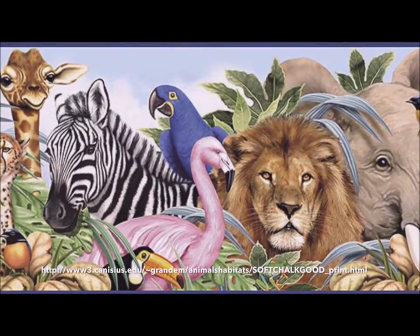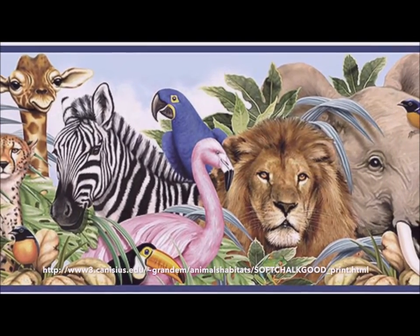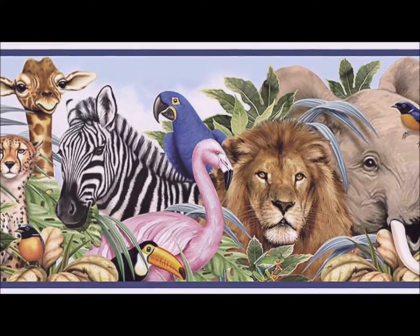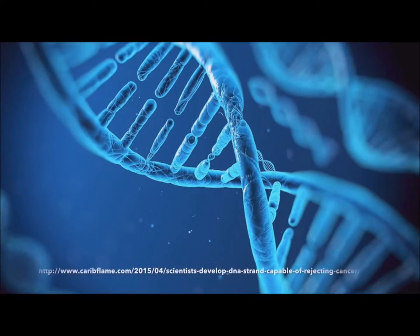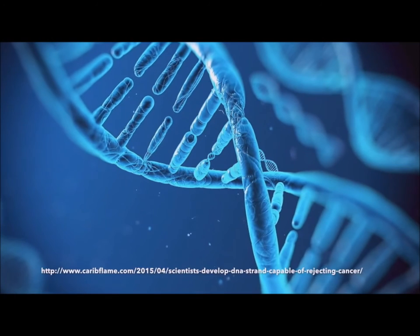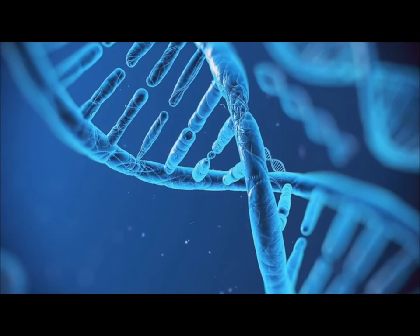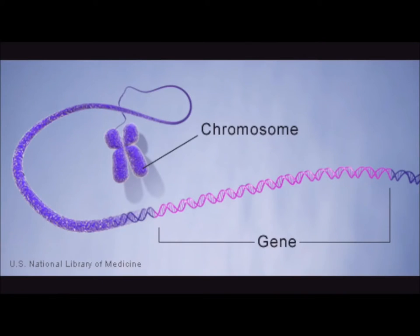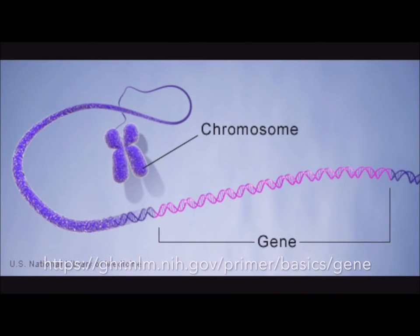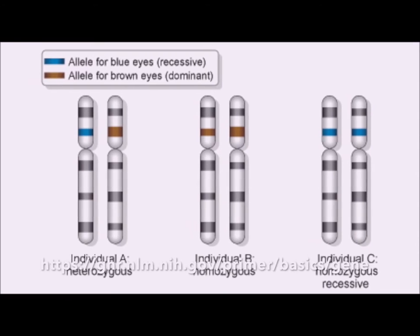The root of all similarities and differences among organisms is the information contained within the molecules of DNA. A gene is a stretch of DNA coding for a functional product. The alternate forms of a gene are called alleles.